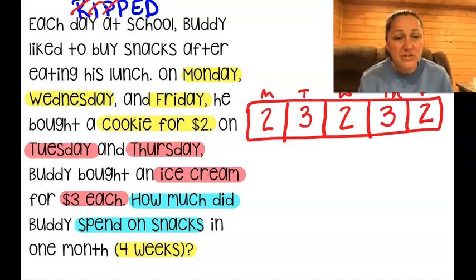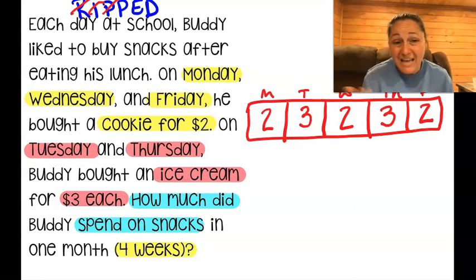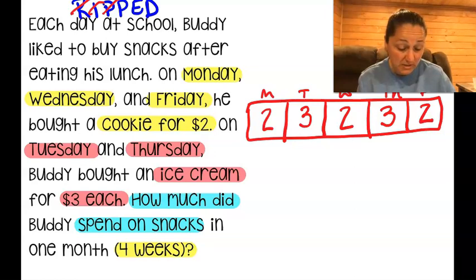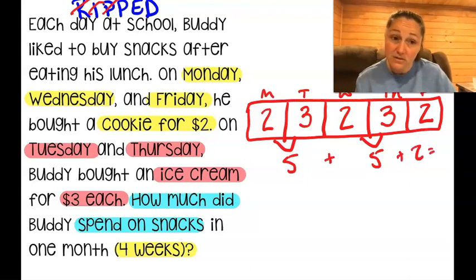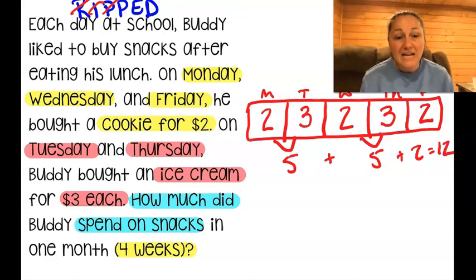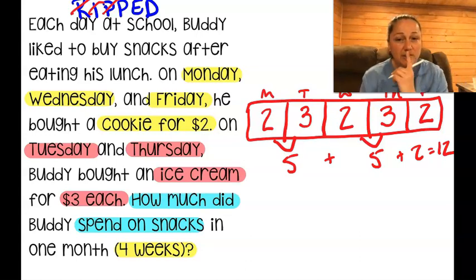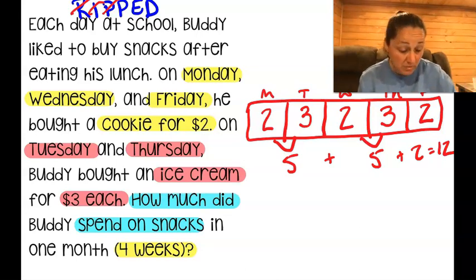Let's figure out how much he has total for the week. I need to add these all up. I could skip count by twos and threes, or I could make buddy pairs. I see some fives — that's a 5, that's a 5, and then I've just got a 2. So 5 plus 5 plus 2 equals 12. Now it's for four weeks: 12 plus 12 plus 12 plus 12. That's repeated addition, or I could multiply: 12 times 4.